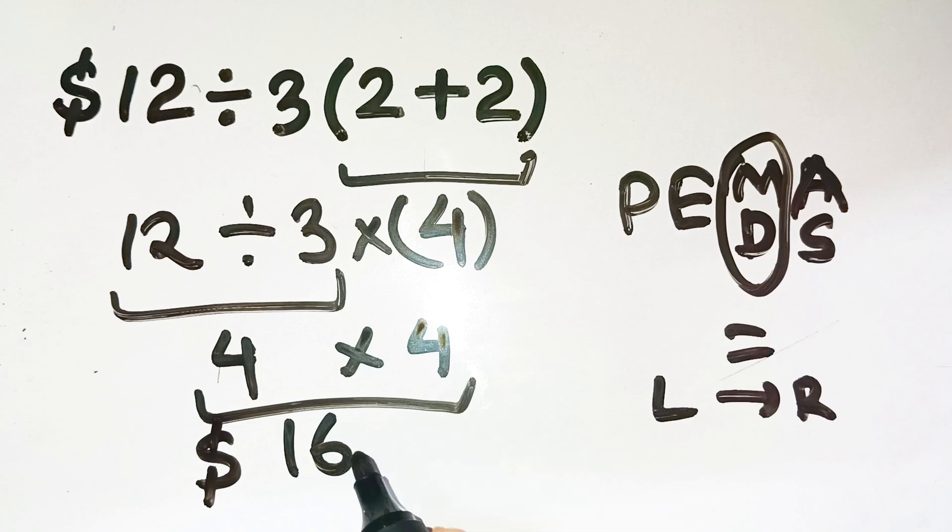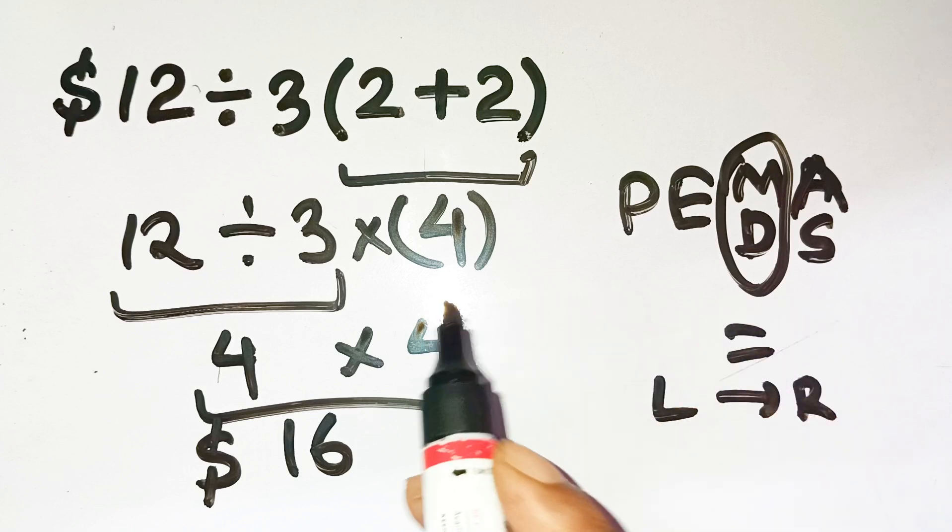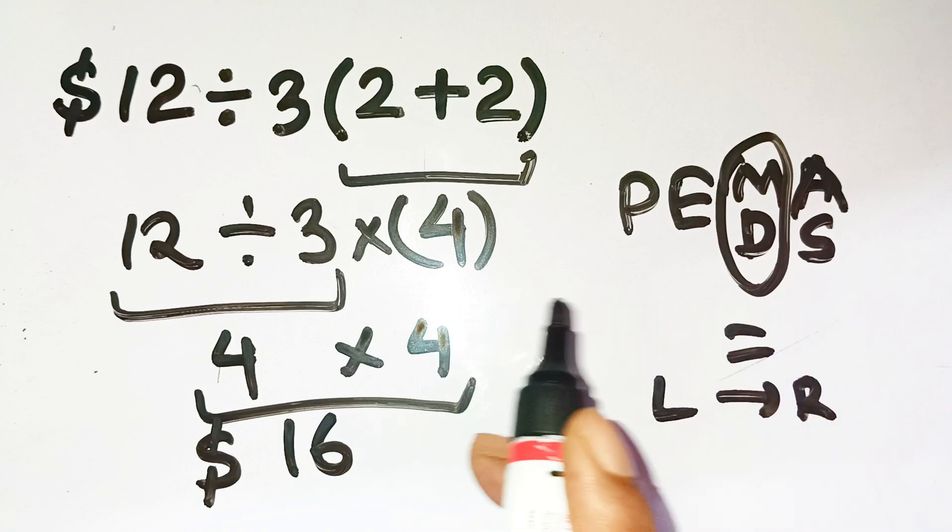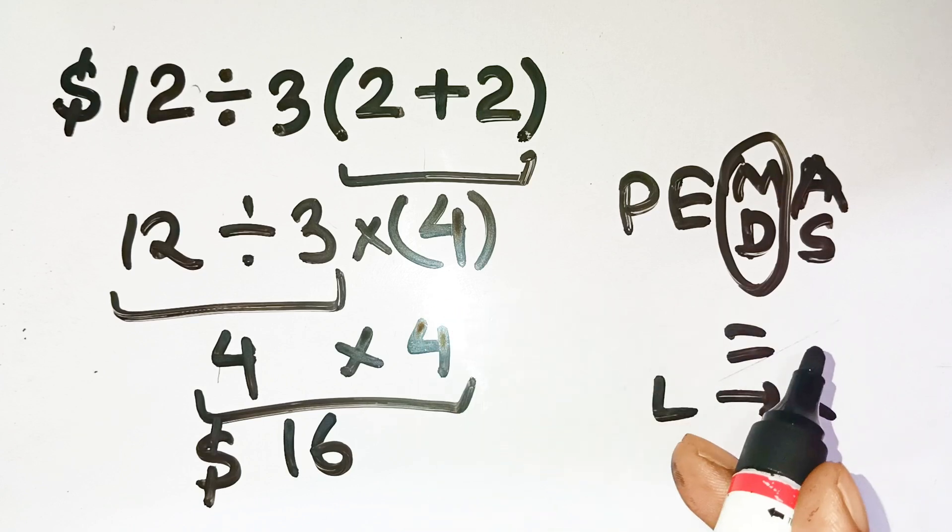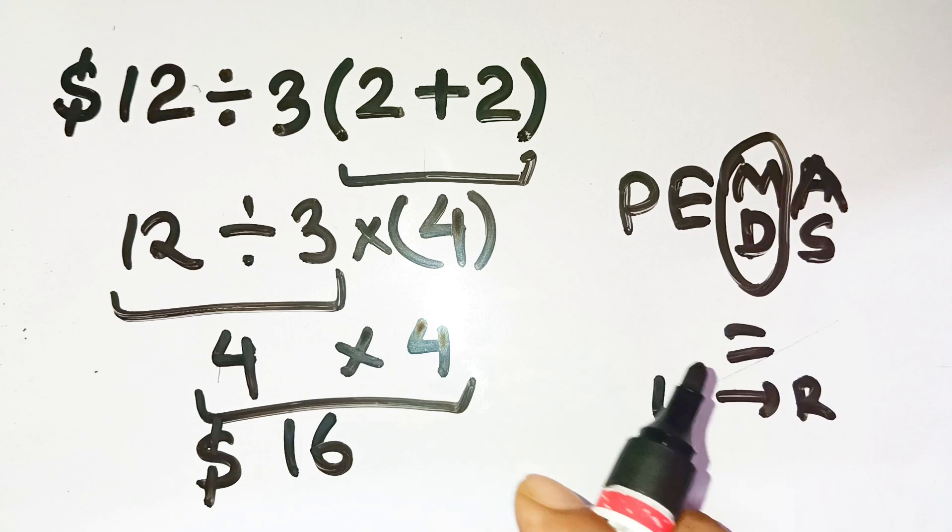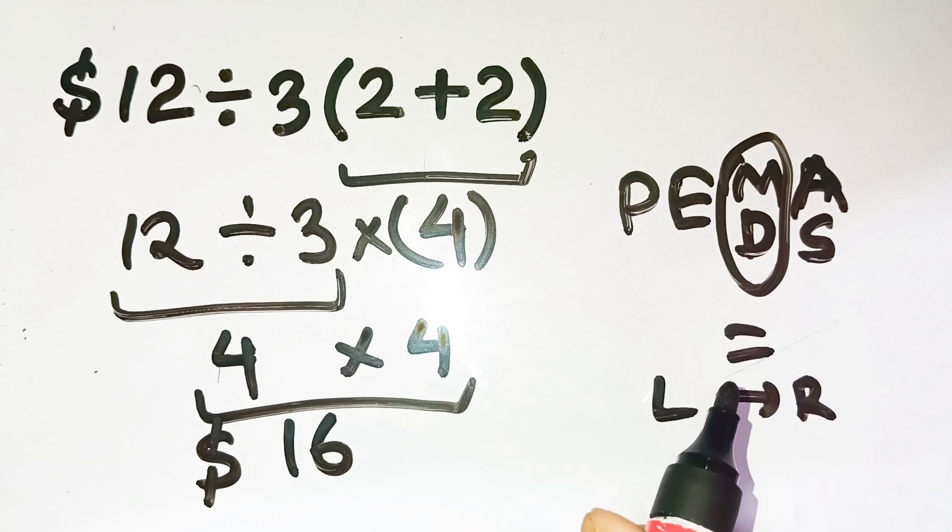Now, let's put this in a financial mindset for a second. Imagine you're managing investments. If you apply the wrong order of operations, it's like misreading your cash flow statement. One small misstep, and your whole return calculation goes off the rails. That's why even hedge fund analysts double-check equations like this because precision means profit.